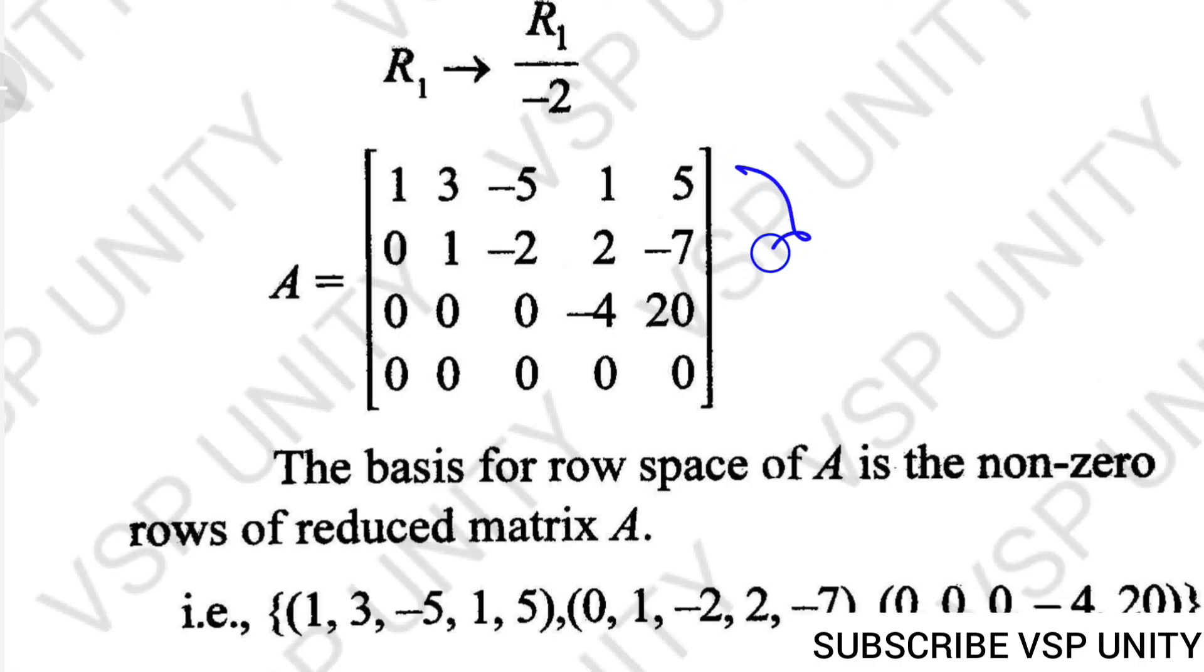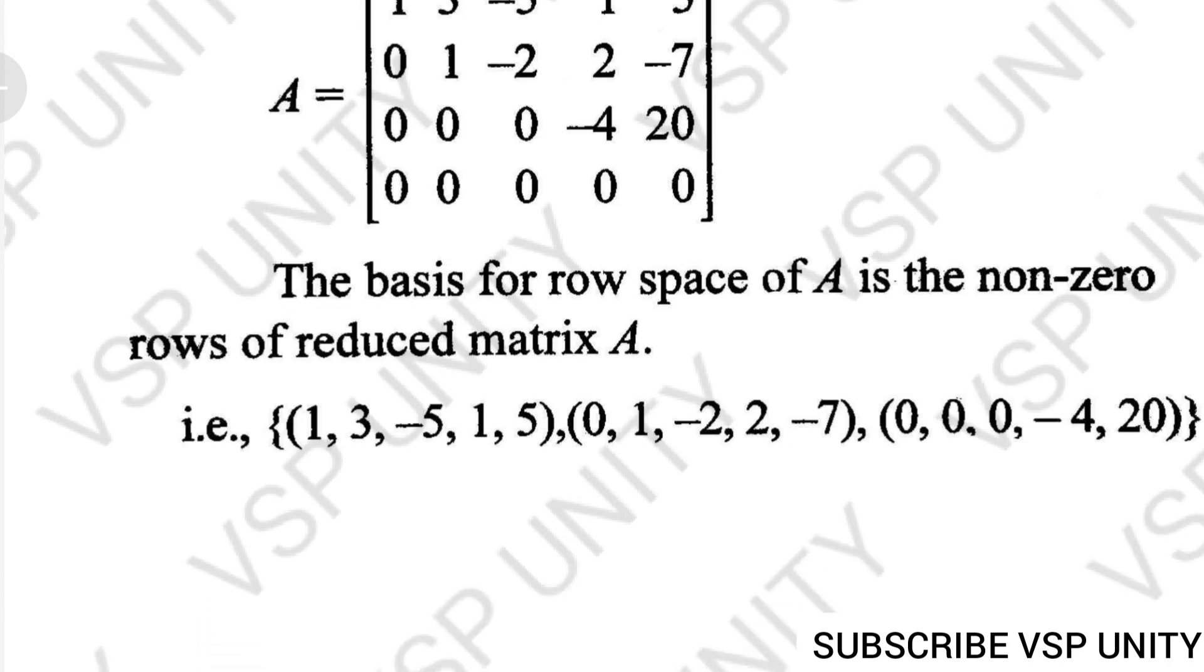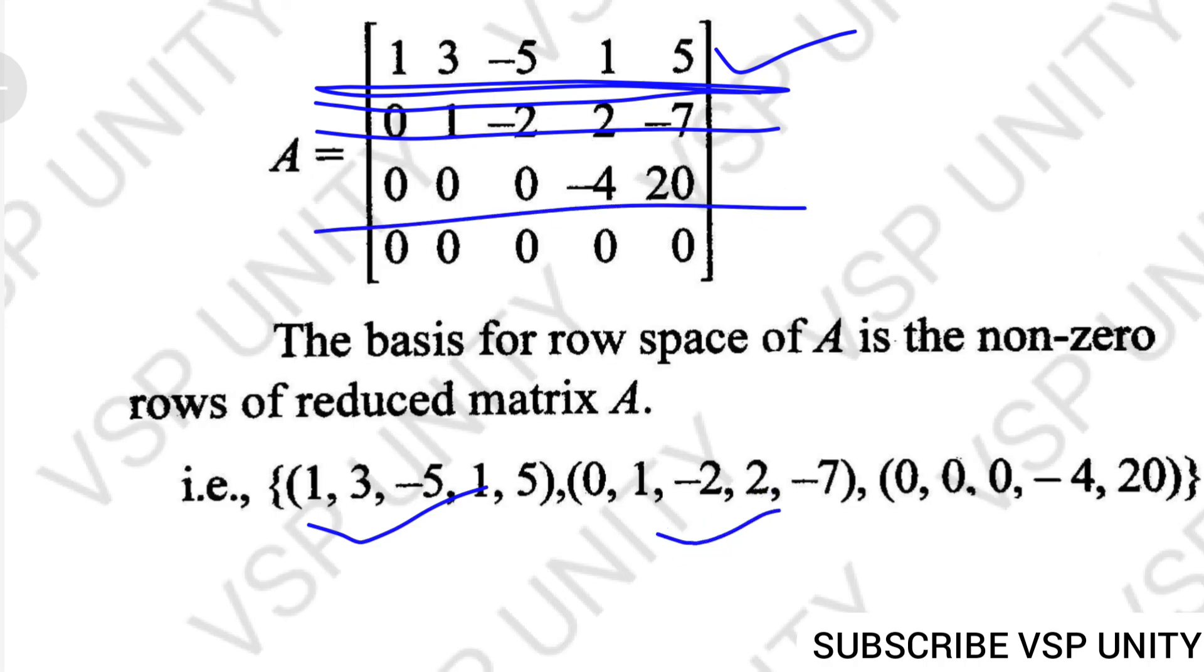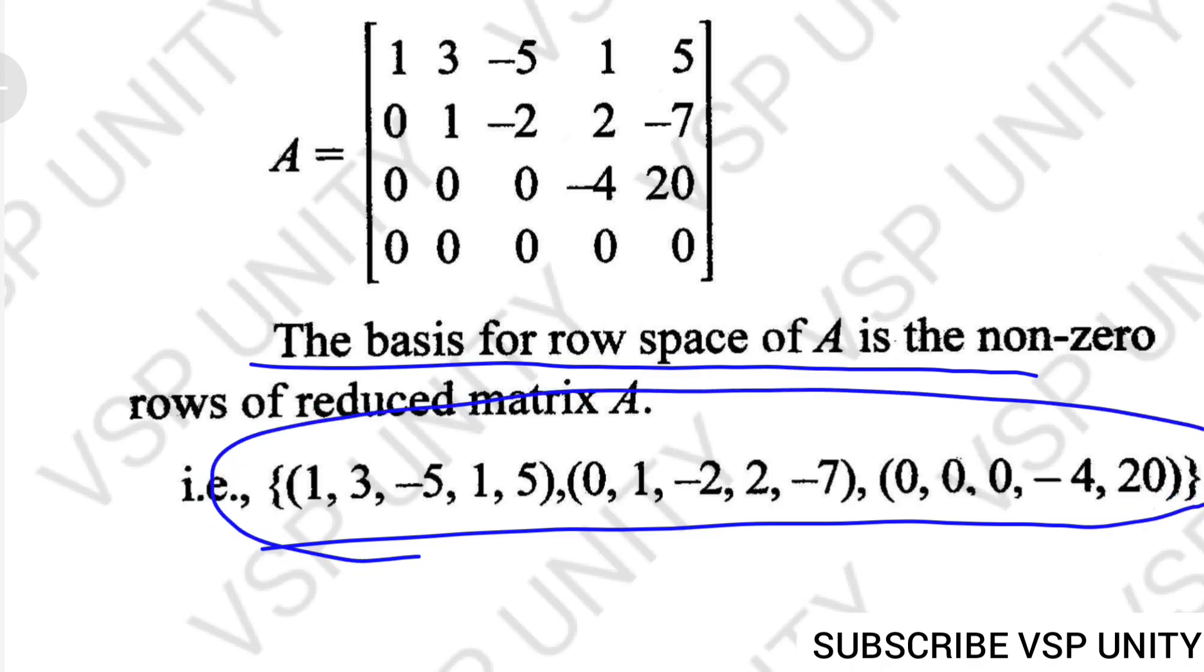What non-zero rows we got, that only is the row space. Basis for row space of A is the non-zero rows of reduced matrix A. The basis for row space is the entire row: 1, 3, -5, 1, 5; then 0, 1, -2, 2, -7; and 0, 0, 0, -4, 20. This is the required basis for row space of A.